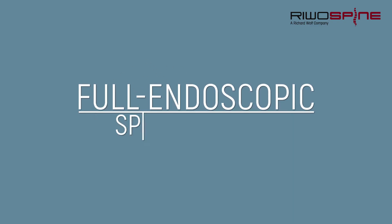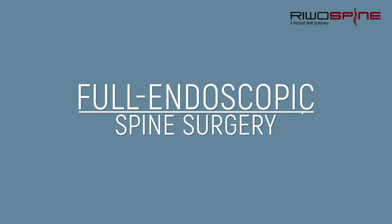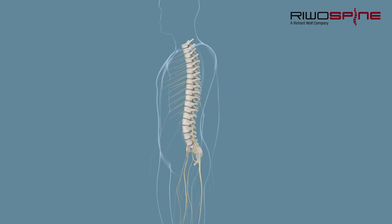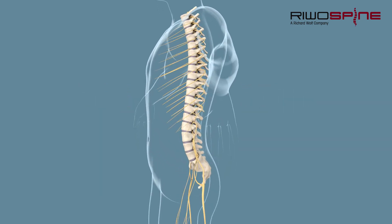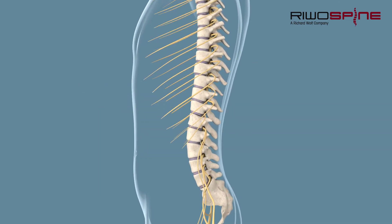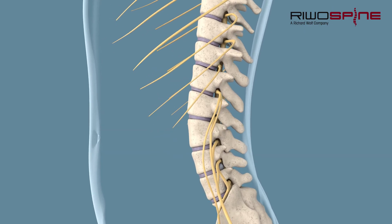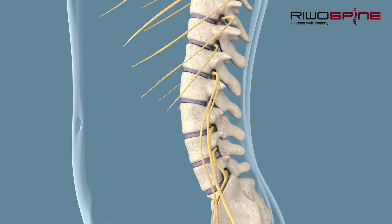The so-called full endoscopic technique is a standard, minimally invasive method for spine surgery that allows the complete removal of a herniated disc and decompression of nerves through a small skin incision and little trauma.